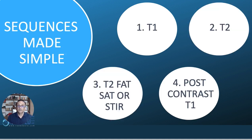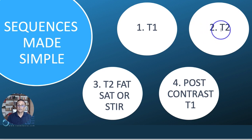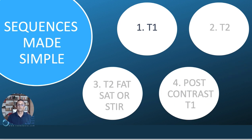If we look at sequences, let's start with that. Sequences can get very confusing — there's a whole lot of physics with it. We're not going to touch physics. What you do need to know are the basic scans that are very commonly done. These are the T1, T2, the T2 fat saturated or STIR scans, and sometimes post-contrast scans. We're going to go through these different types of scans.